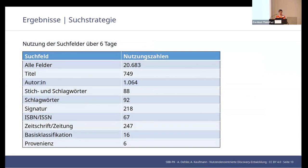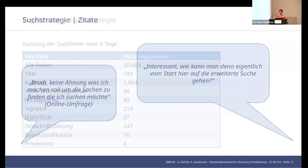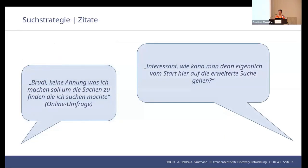The search fields that are used at all are those that search for a certain known item. We have feedback on the individual results. One comment was: 'How can you move to extended search from here?' These comments are from the participatory observation, unless marked as online survey, in which case they are written feedback from survey participants.